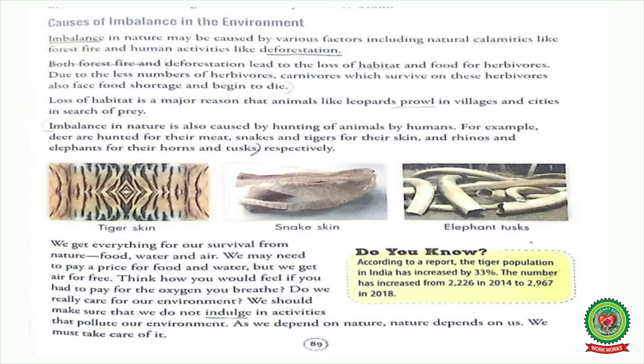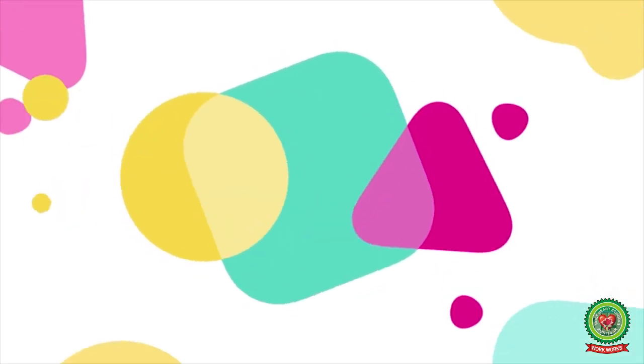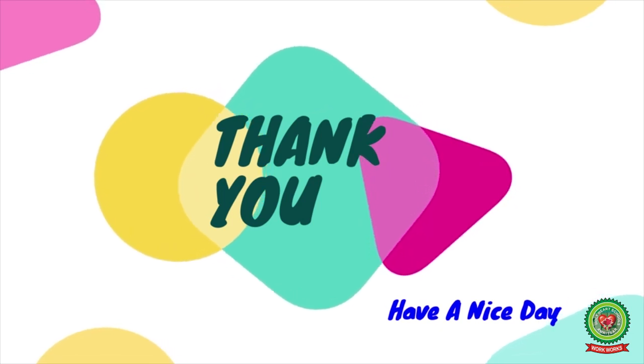Today we discussed about causes of imbalance in nature. In this chapter we have covered: organization of living beings, food chain, interdependence of plants and animals, and causes of imbalance in the environment. Students, read this chapter thoroughly and revise the related terms and questions. Thank you, have a nice day.